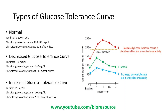If a person has a decreased glucose tolerance curve, the fasting will be high, greater than 100 mg per deciliter. After one hour of glucose ingestion, the blood glucose will rise to greater than 180 mg per deciliter, and even after three hours the values will still remain greater than 140 mg per deciliter. Such a curve indicates a decrease in glucose tolerance.